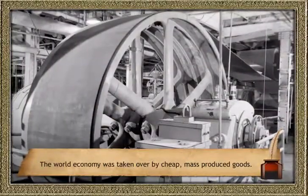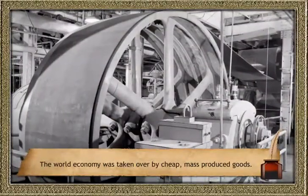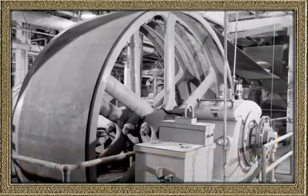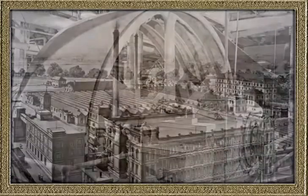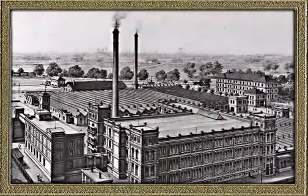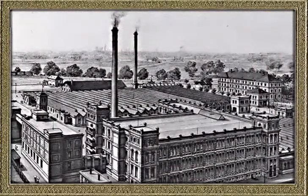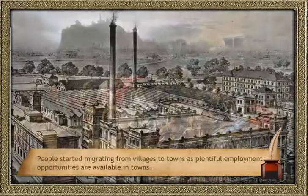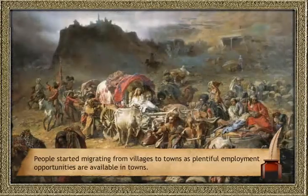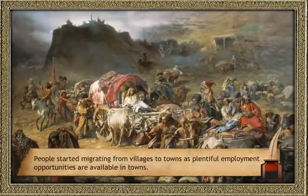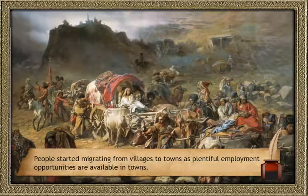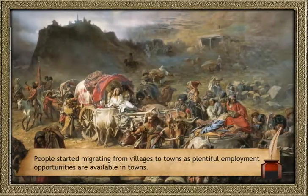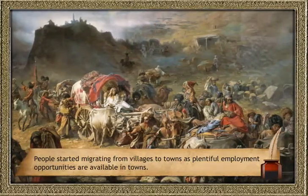The world economy was taken over by cheap, mass-produced goods. Because of these cheaper goods, the living conditions of people were improved. People started migrating from villages to towns as plentiful employment opportunities were available in towns.